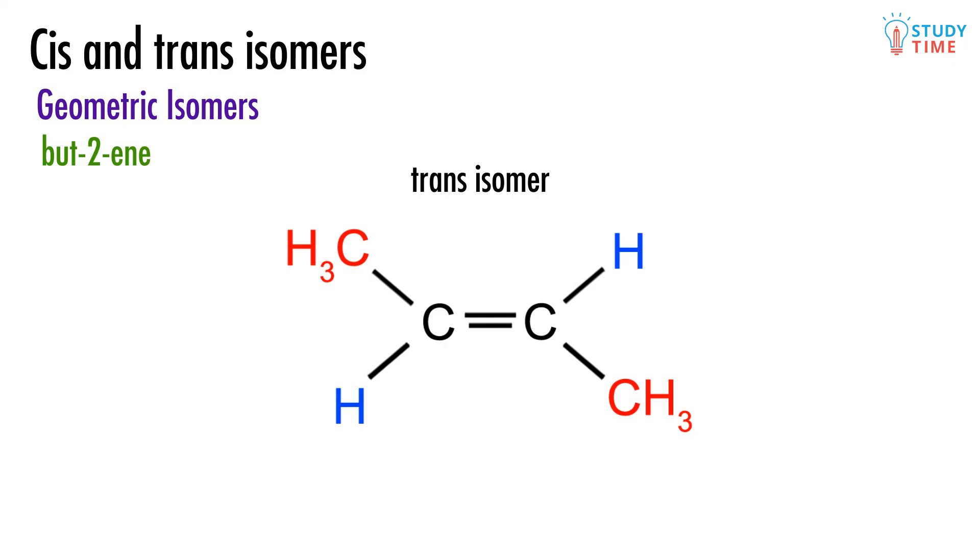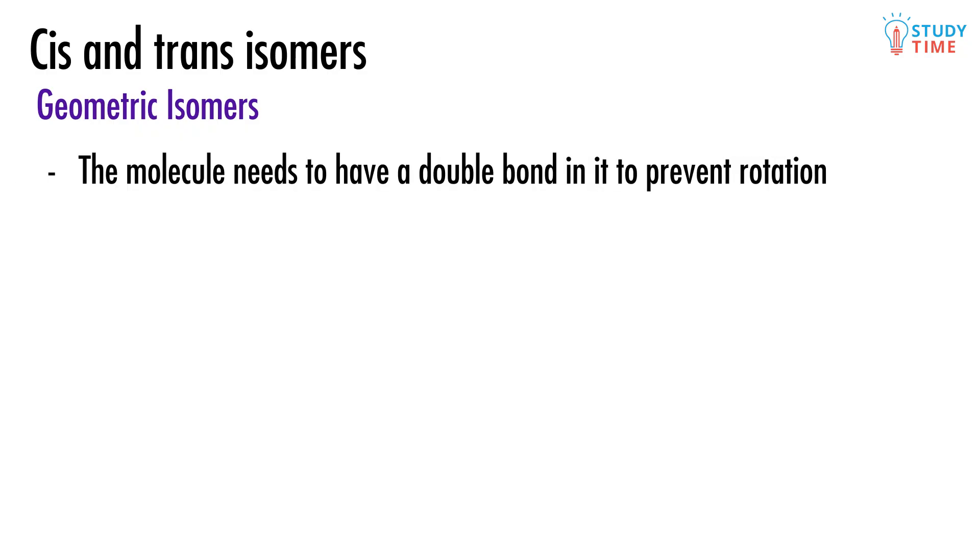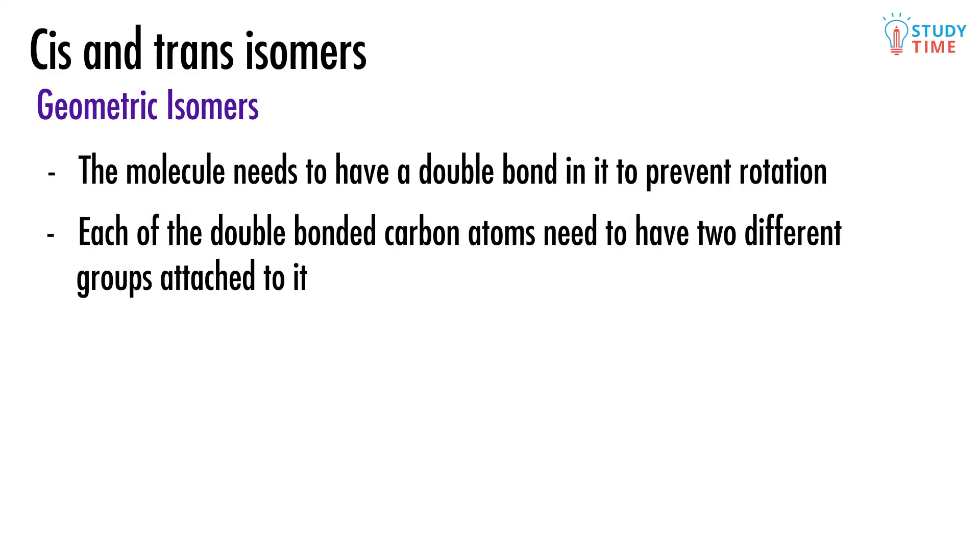In order for a molecule to be able to exist as cis and trans isomers, there are two very different criteria that need to be satisfied. The molecule needs to have a double bond in it to prevent rotation, and each of the double bonded carbon atoms needs to have two different groups attached to it. Because but-2-ene has both of these qualities, we can say for sure that it can exist as these cis and trans geometric isomers.